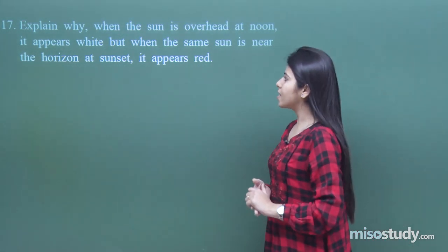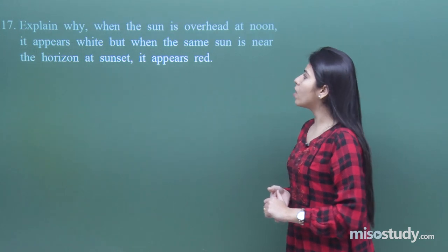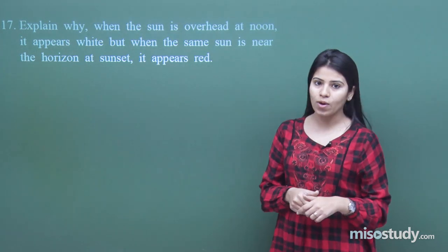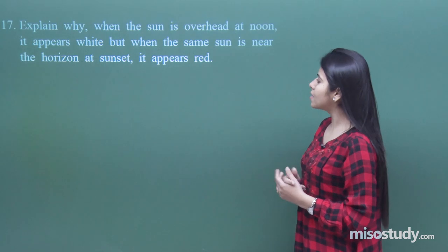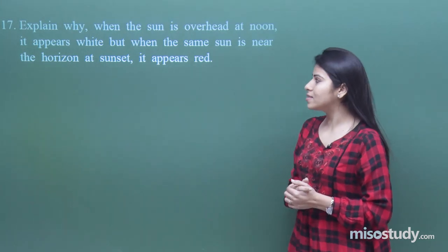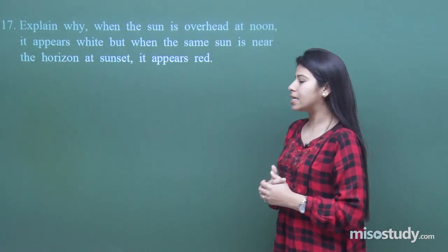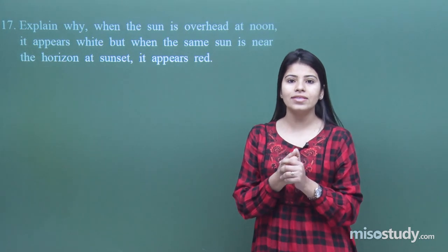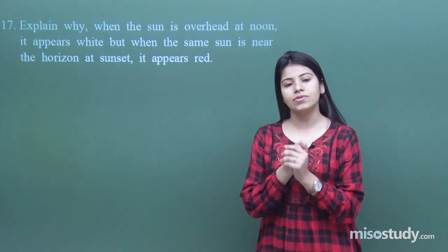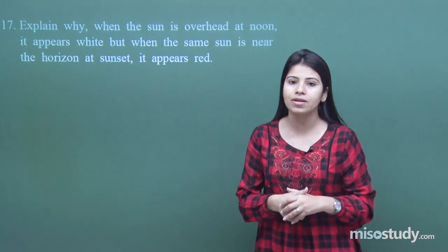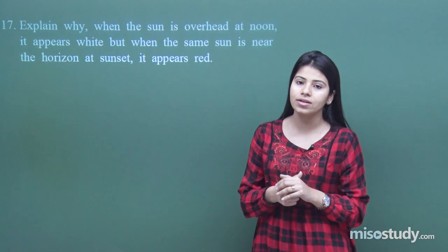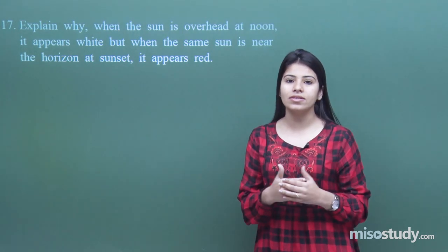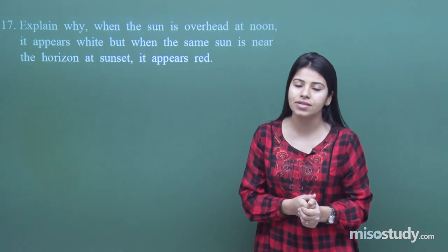The question says: explain why when the sun is overhead at noon it appears white, but when the same sun is near the horizon at sunset it appears red. We have to give the reason why when the sun is overhead it appears white and when the sun is near the horizon it appears red.